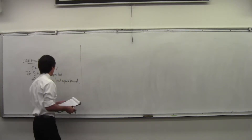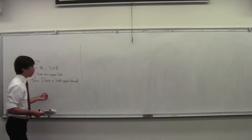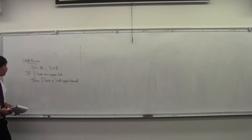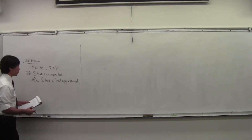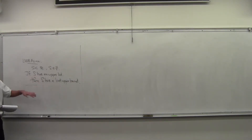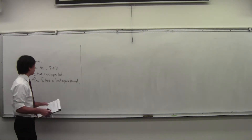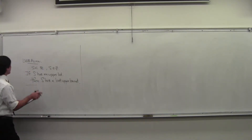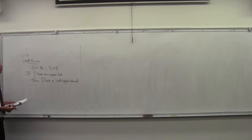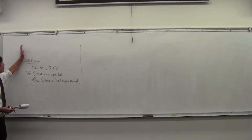Notice that we do not give the opposite statement that any set with a lower bound has a greatest lower bound. We don't give some sort of greatest lower bound axiom. There's nothing like that.